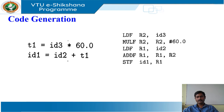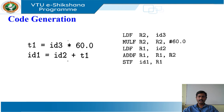The first instruction loads the content of address ID3 into register R2, then multiplies it with the floating point constant 60.0. The hash in the second instruction signifies that 60.0 is to be treated as an immediate constant. The third instruction moves ID2 into register R1 and the fourth instruction adds to it the value previously computed in register R2. Finally, the value in register R1 is stored into the address of ID1. So the code correctly implements the assignment statement.